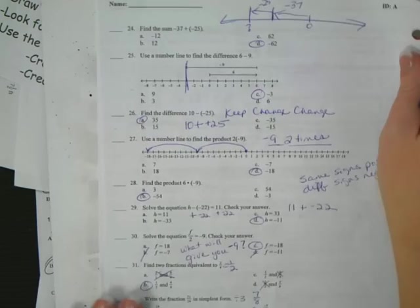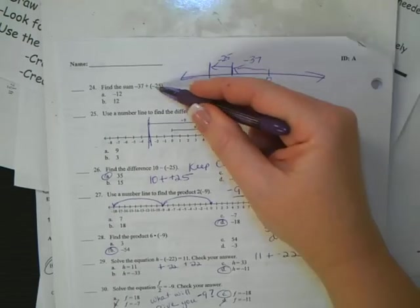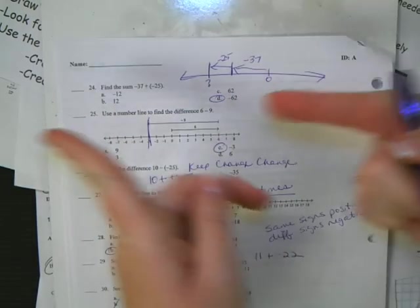Alright, number 25. Use the number line to find the difference, 6 minus 9. So the first step is going to the 6, then I'm going to subtract 9. Where I end up is my answer, negative 3. So make sure you know how to interpret these models.